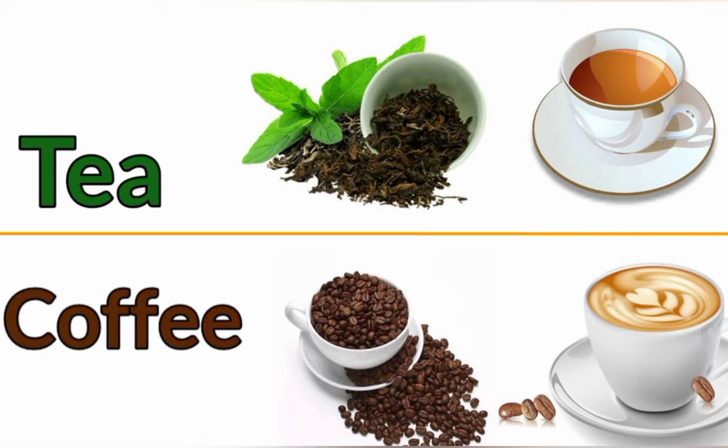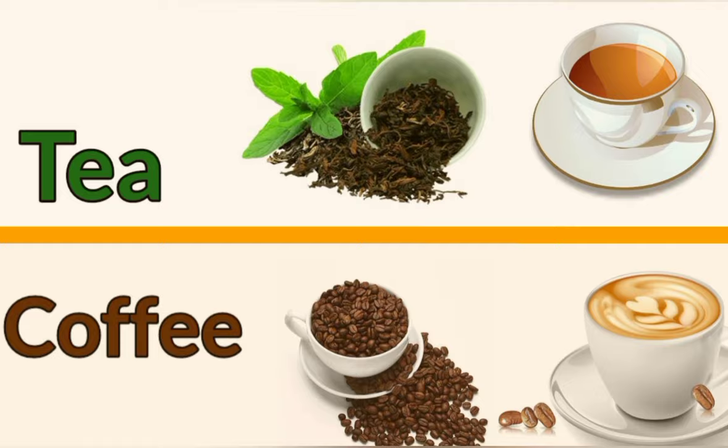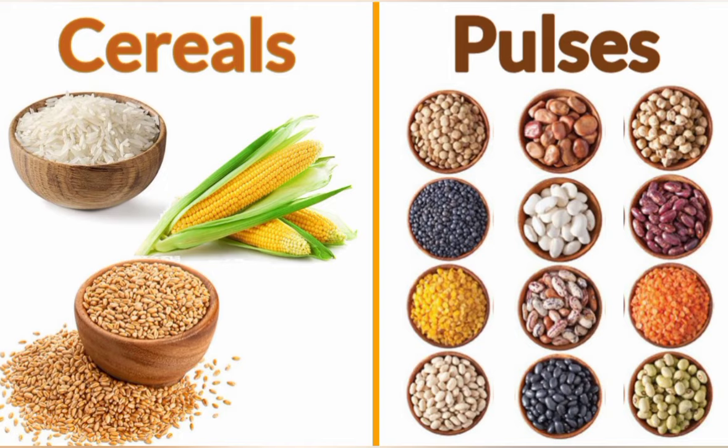We get tea from the leaves of the tea plant. We get coffee from the seeds of the coffee plant. Cereals and pulses are called food grains. Cereals are the seeds of the plant used to make flour such as rice, corn and wheat, while pulses are the seeds of the plant which are cooked. The common name of pulses is dal.